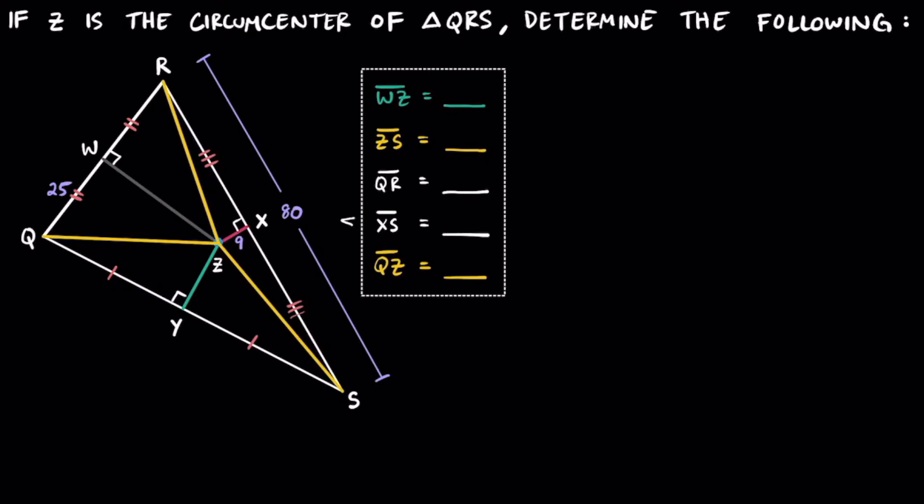I think one of the easier things to figure out here is going to be finding the length of XS, so if we know that the length of RS is equal to 80, then the length of XS is going to be 40, because the length of RX is also equal to 40. Because we know that point X is the midpoint of segment RS, we know this is going to be true.